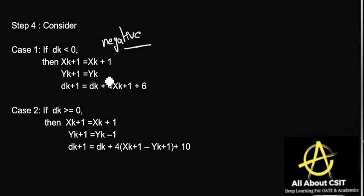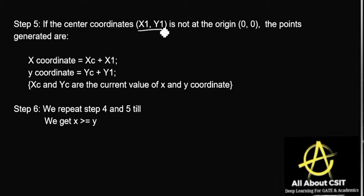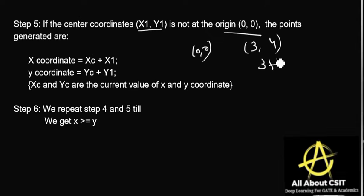When dk < 0: yk+1 = yk (previous y value unchanged), and dk+1 = dk + 4(xk+1) + 6. First calculate xk+1, then yk+1, then the decision parameter. When dk ≥ 0 (positive): xk+1 = xk + 1, yk+1 = yk − 1 (decrement previous y), and dk+1 = dk + 4(xk+1) − 4(yk+1) + 10. If the center coordinates are not at the origin — say center is (3,4) — then the actual plotted point is (3 + xk, 4 + yk).